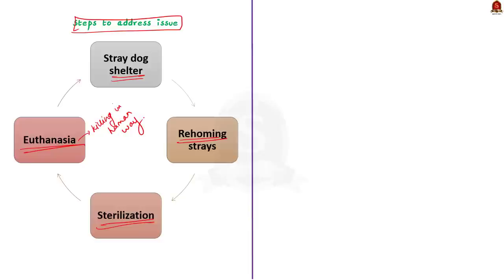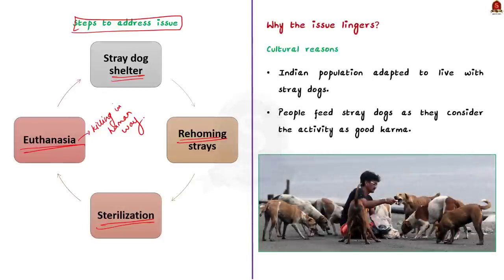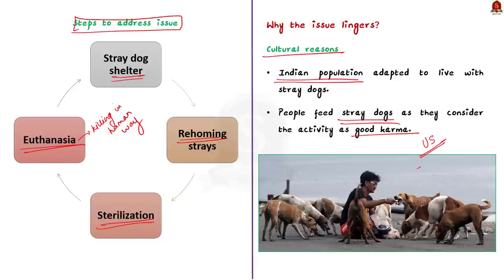Despite these solutions available, India still has a huge population of stray dogs. The first reason is cultural: the Indian population is quite tolerant towards stray dogs and even considers feeding them as good karma. In some cases, the public have prevented official efforts to remove stray dogs. This is quite opposite to the mindset in western countries. For example, the people in the US have zero tolerance towards stray dogs, and every year up to 3 million dogs and cats are euthanized in the US. This is why the US does not have stray animals and India has many.